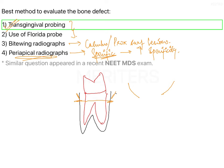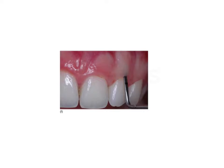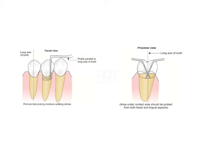You take a probe, go all the way below the junctional epithelium, and probe until you hit hard bone — similar to how you hit bone when giving anesthesia. You then walk the probe circumferentially around the tooth. This helps identify any type of bone defect present — whether it is a fenestration, a dehiscence, or a crater. As shown in the image, this is transgingival probing on the facial surface. In the interdental area, you can identify whether a crater is present.